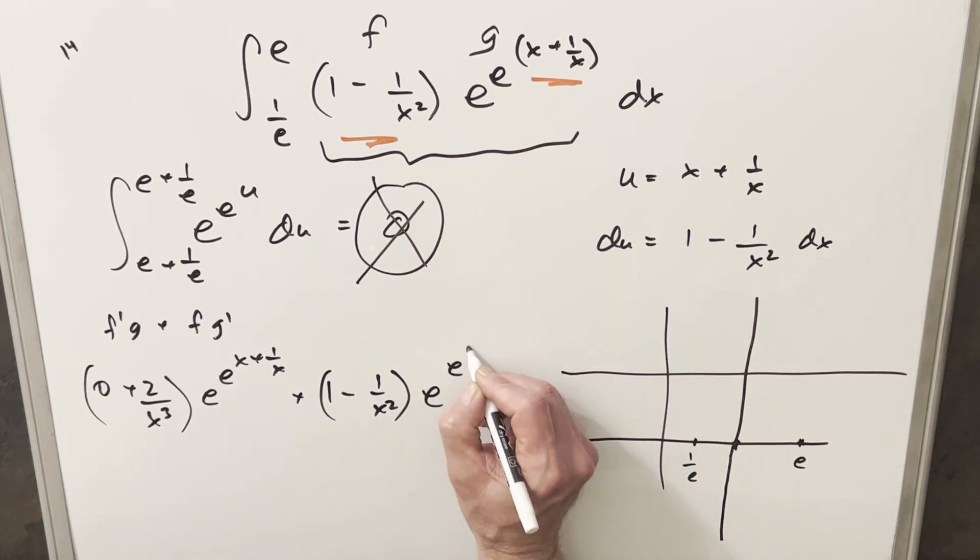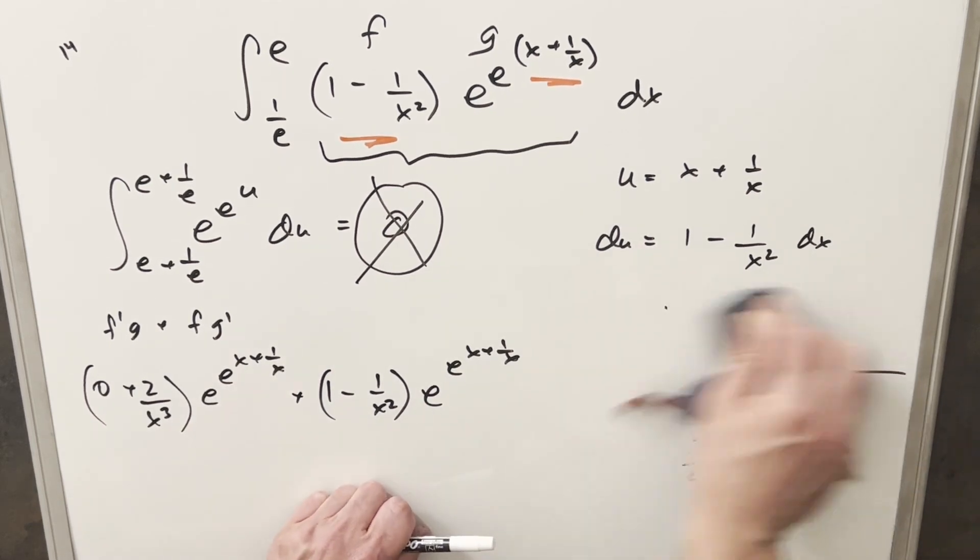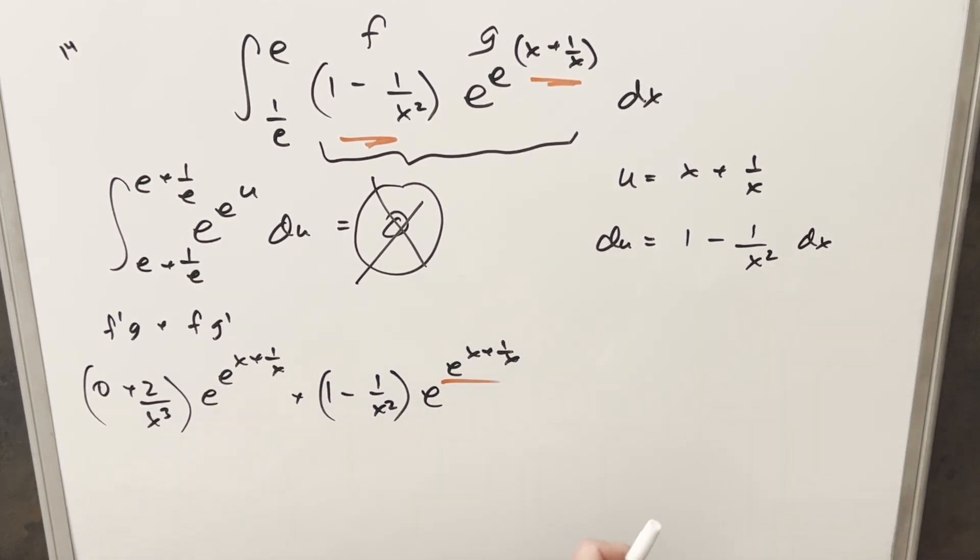And then we need to take the derivative of this thing. So first, it's going to be e to the e to the (x plus 1 over x). Let me get rid of this stuff. And then we'll need the chain rule on this right here. So that's going to give me e to the (x plus 1 over x). And then we need the derivative of this, and that's just going to be 1 minus 1 over x squared.